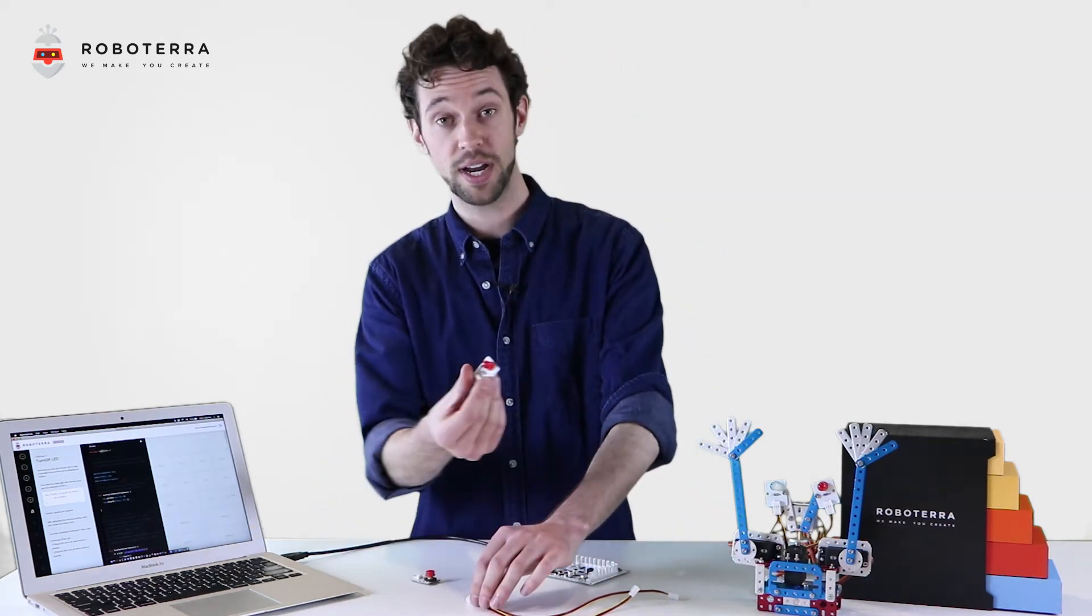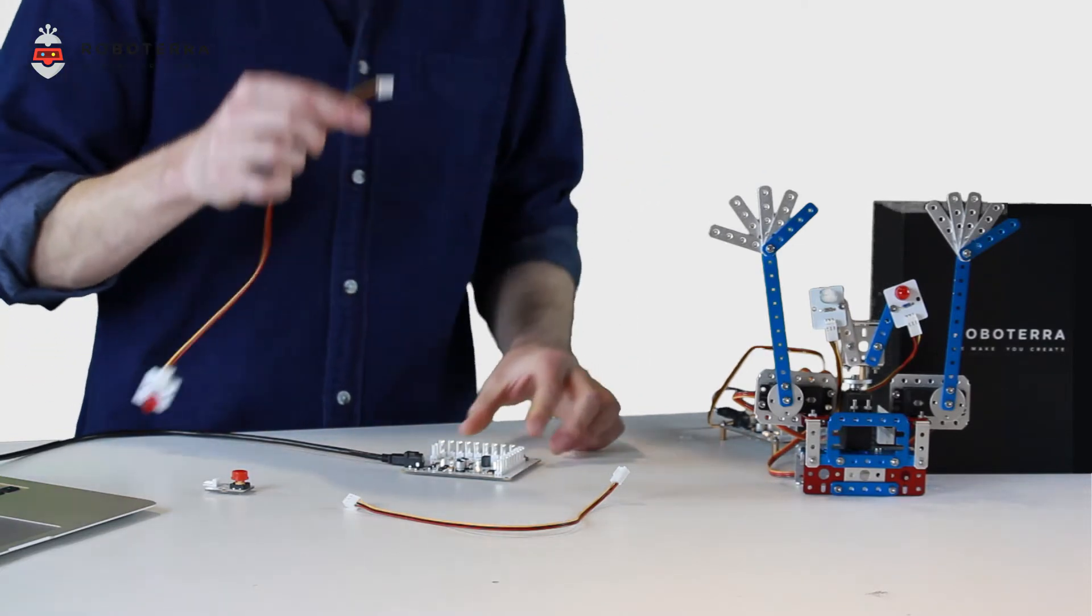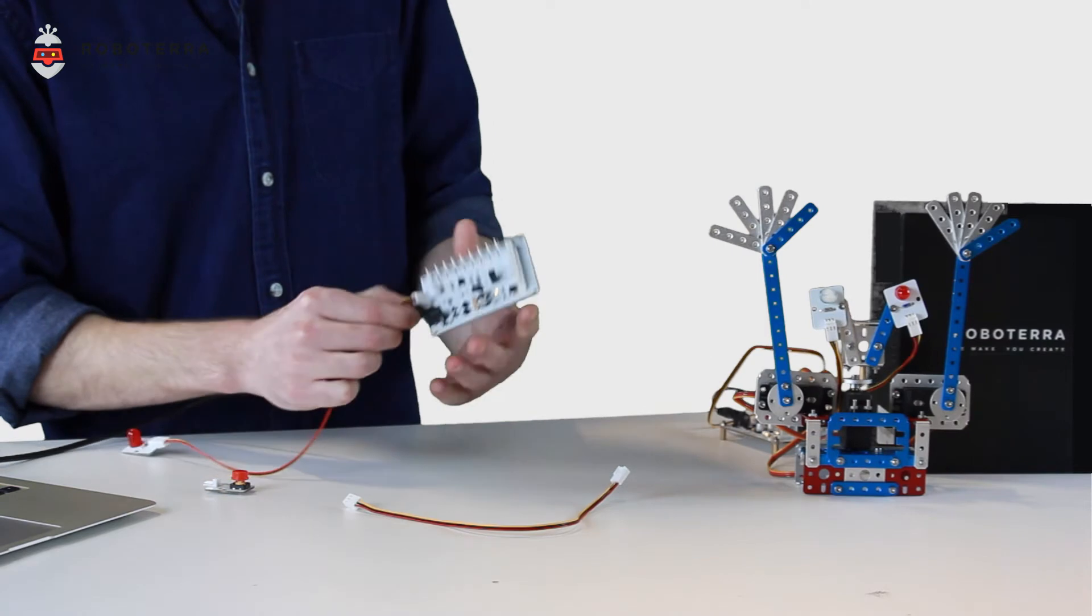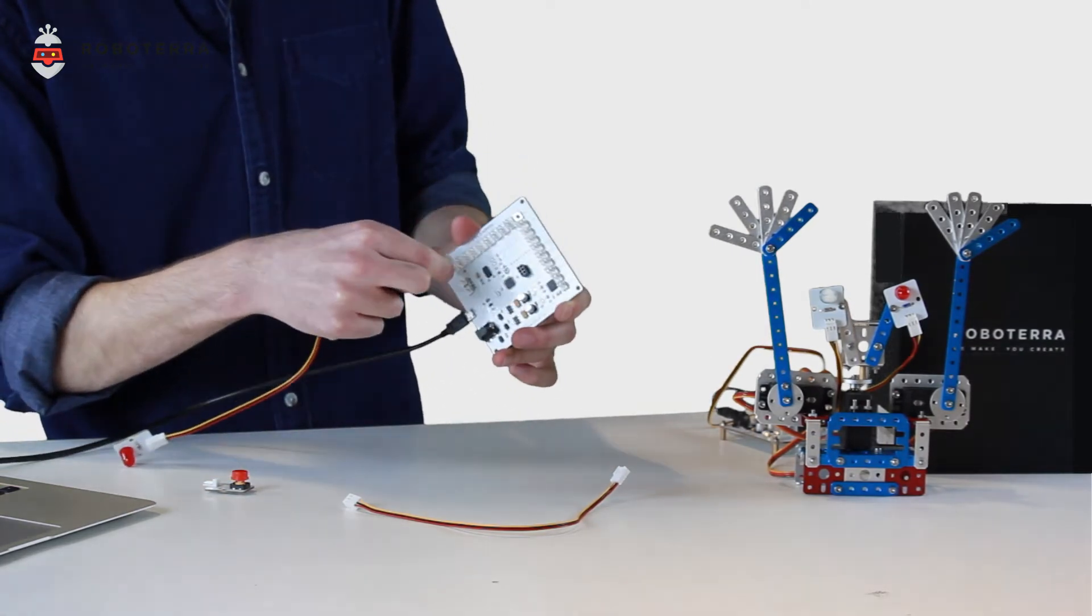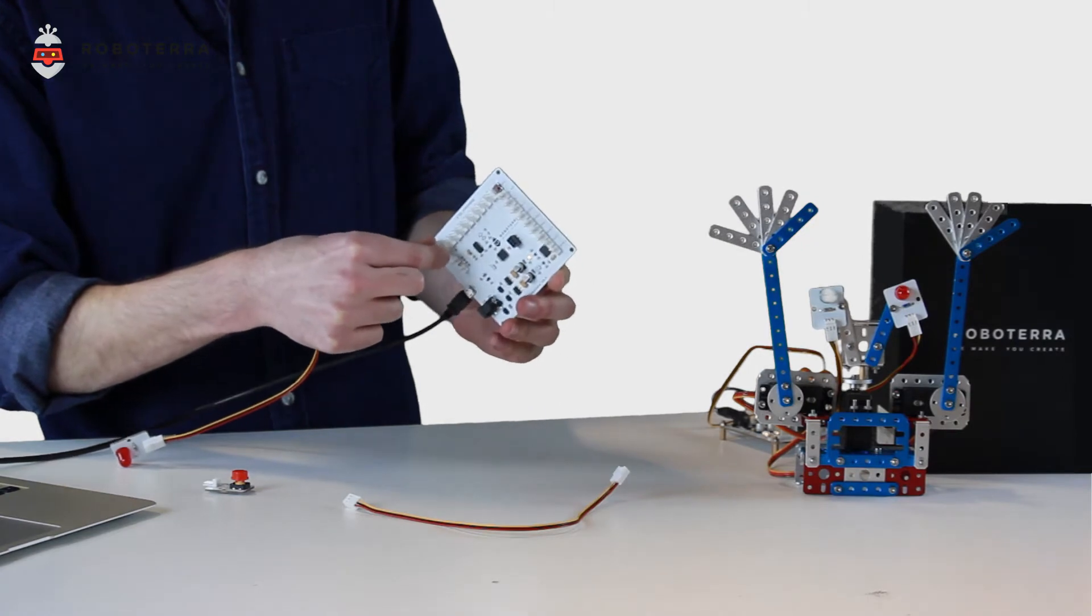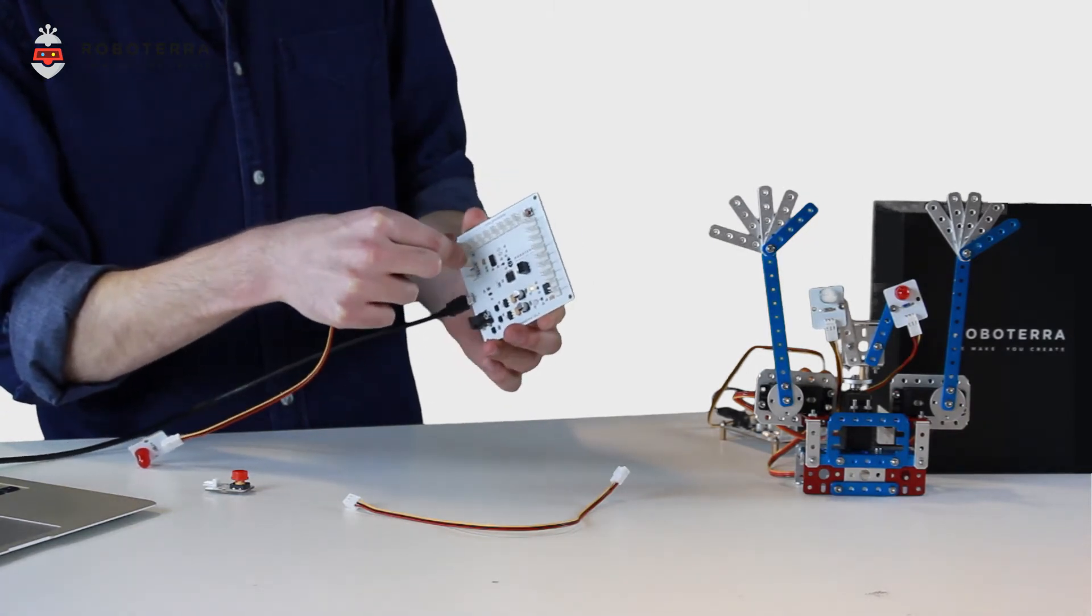First, I'm going to take my red LED, attach one end of the wire, and the other end of the wire is going to go into RoboCore, into port DIO1. Nice and gently, like so.